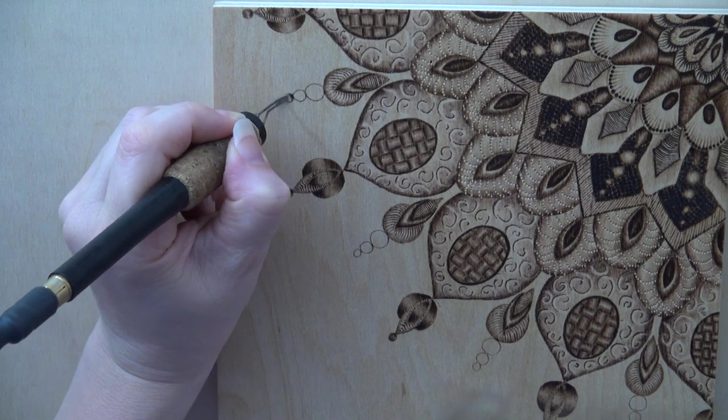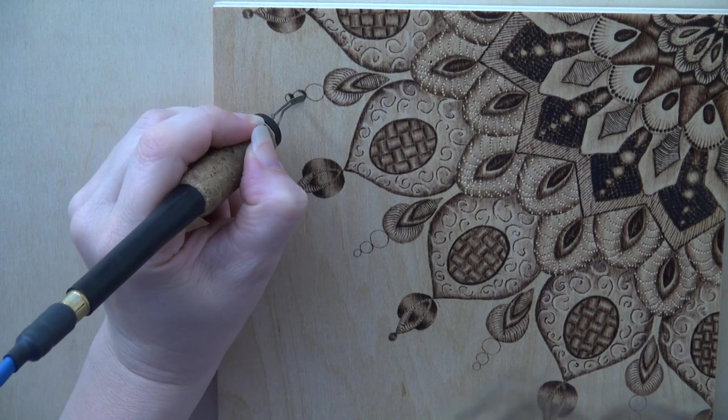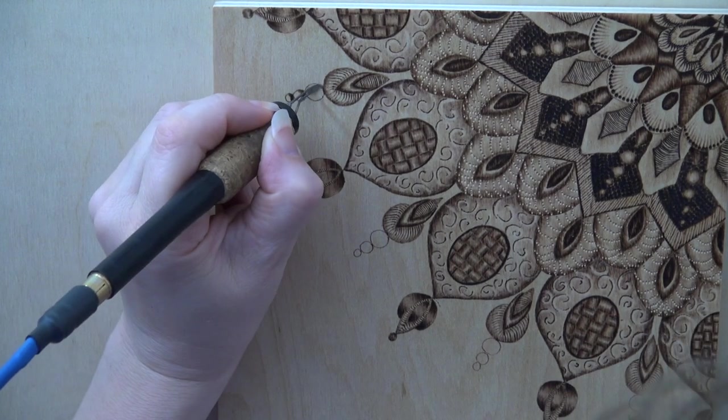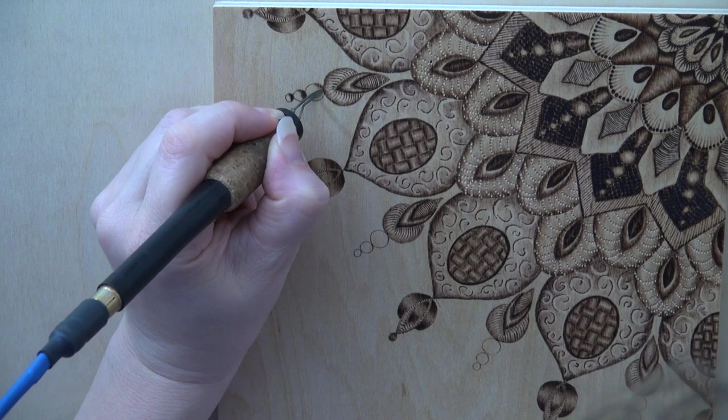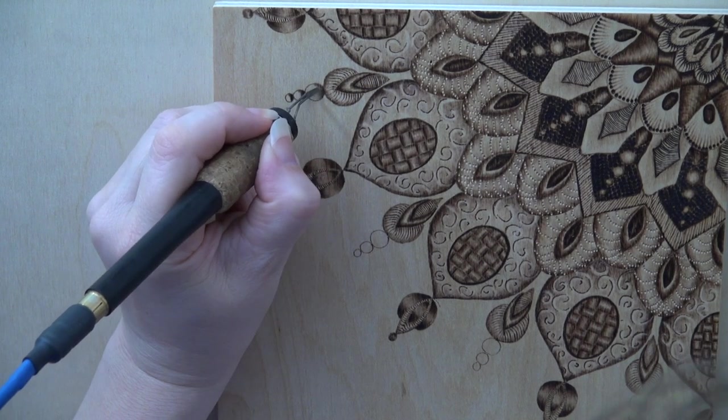With the three stacked circles, burn the top and bottom of each one. Again, leave a thin pale line along the center of each circle. I find that it is quicker to burn all of the tops or bottoms before burning the opposite side.